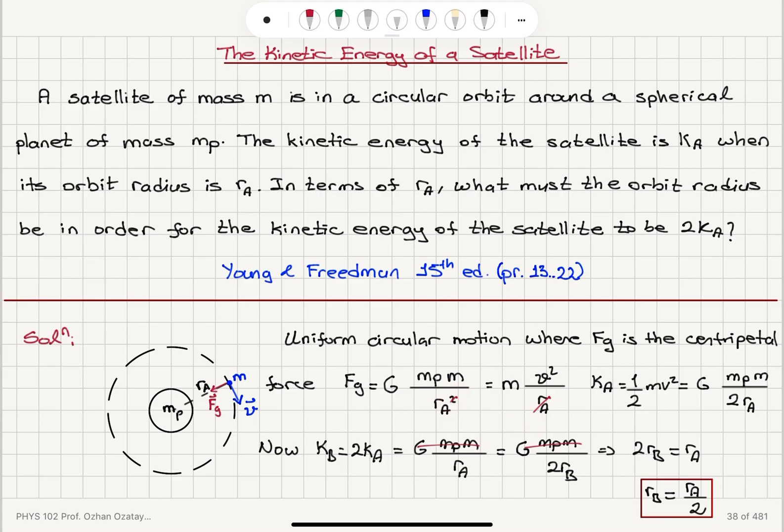And I have an expression for mv square. So if I have one half mv square, that's the kinetic energy, so G mp m over 2 r a is the kinetic energy.